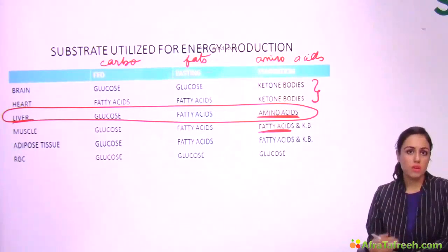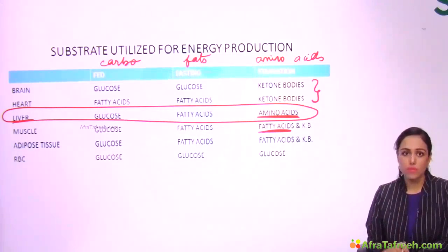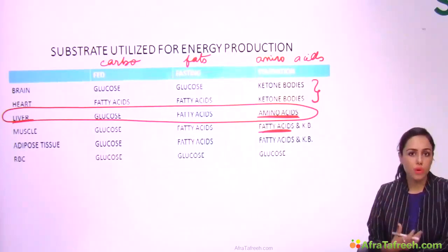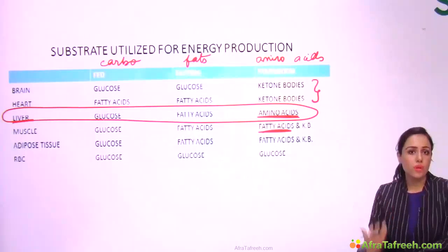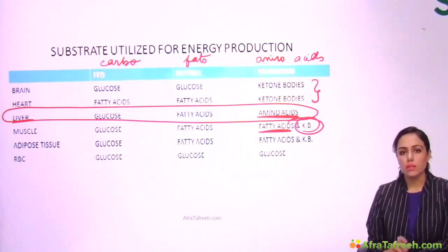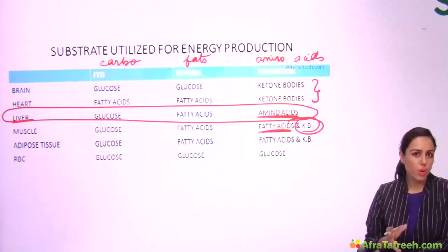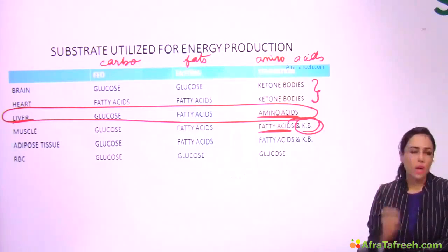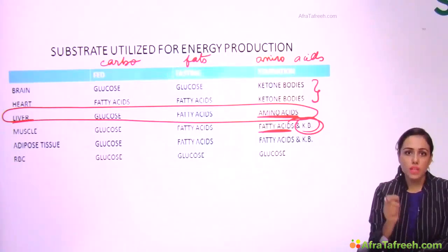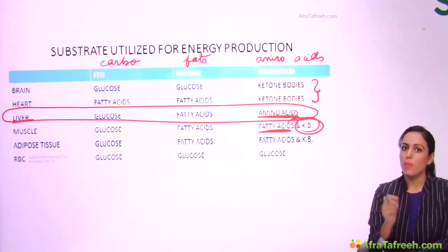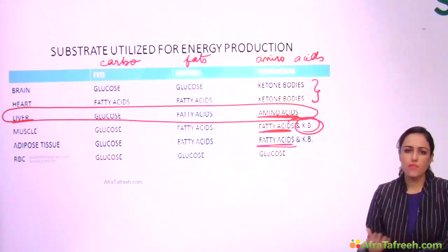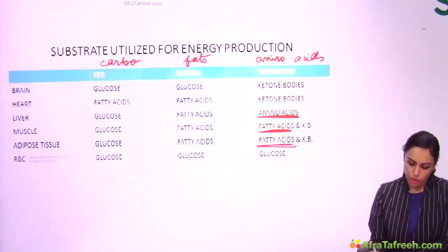For muscles in starvation, I've written fatty acids — because as long as fatty acids are available, the muscle will try to use them and delay the use of its own proteins, since the proteins in muscle are very important. When muscles start using their own proteins, that situation is near death. I've also written ketone body for muscle. Earlier this was a controversy, but now it's clear in standard textbooks that muscles can use ketone bodies. So to summarize: ketone bodies can be used by three organs — heart, brain, and muscle.